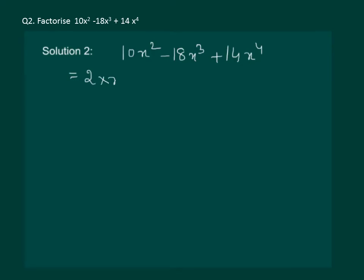So, we can write as 2x square. Now it remains to find out the terms that remain in the bracket. When we divide each term one by one with 2x square, this will remain as 5, this will remain as minus 9x, and we will get 7x square. Or we can write it as 2x square into 7x square minus 9x plus 5.